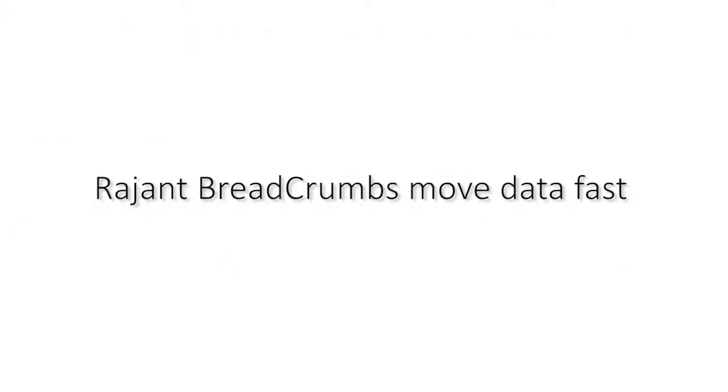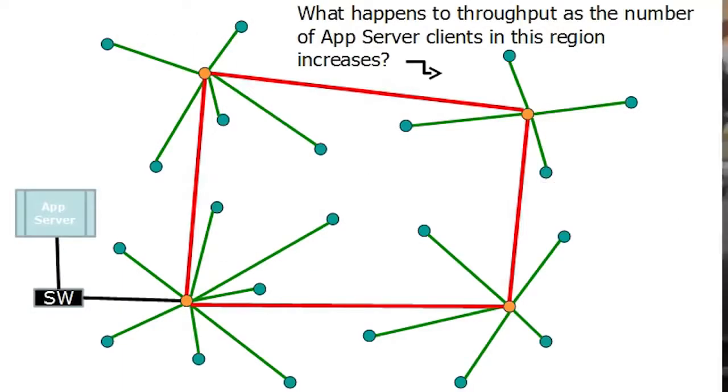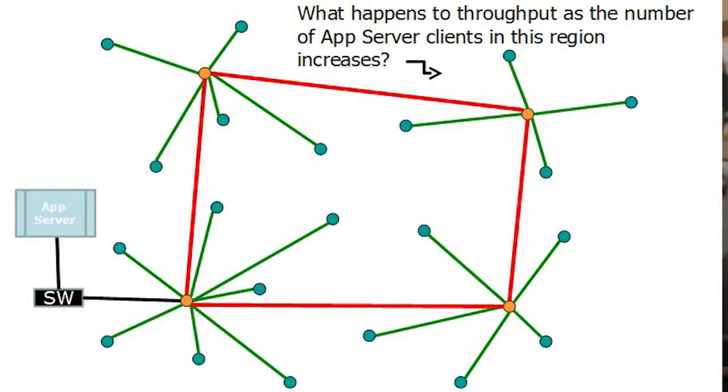Rajant breadcrumbs move data fast. If you take a look at this traditional wireless network again, what do you suppose happens to throughput as the number of application server clients in the upper right region of the screen increases? Well, first of all, throughput to the access point provided by the infrastructure node is shared between all the associated clients. So those four clients are all sharing RF space on one frequency. Secondly, the backhaul traffic is bridged on one frequency all the way back to the application server. So you have potential bottlenecks on both frequencies.